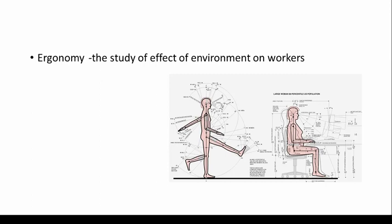Ergonomics is the study of the effect of environment on workers. Nowadays many big MNCs like to know how they are treating their employees and how their workers are performing. Especially in companies where life is at risk — such as oil and gas, chemical industries, or ships — where human life must be safeguarded because the products or processes can be harmful. Such organizations study what kind of environment and what kind of effect is going on. It's very popular nowadays.